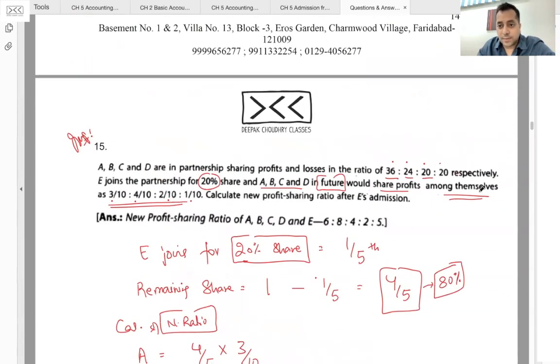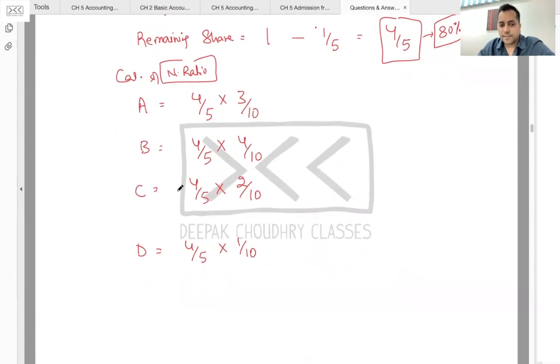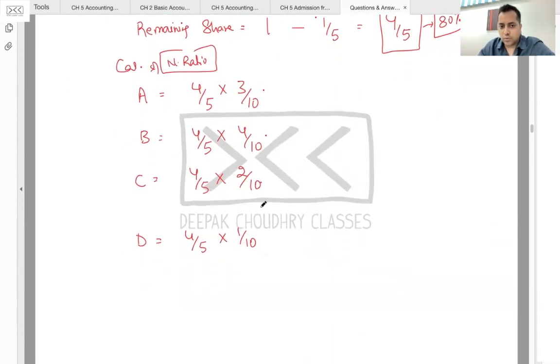To yeh jo line thi ki among themselves, in future partners would share among themselves in the ratio 3:4:2:1.